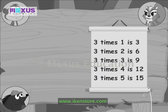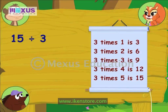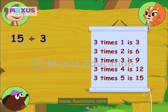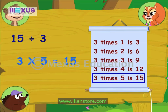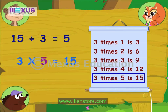Use the table again to divide fifteen flowers among the three of you. Mikey, how many would each get? The table says three times five is fifteen. Therefore, I think each of us would get five flowers. That's correct.